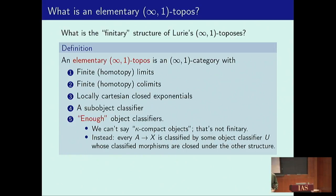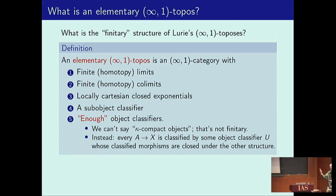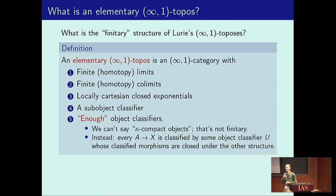Let's try to extract the finitary part of that structure of infinity-one toposes. It's got lots of stuff basically the same as in the one-categorical case: finite limits, finite coproducts — everything in the homotopy infinity sense, of course. It's got exponentials, it's locally Cartesian closed so it has exponentials in slice categories as well. It has a subobject classifier, and it has enough object classifiers.